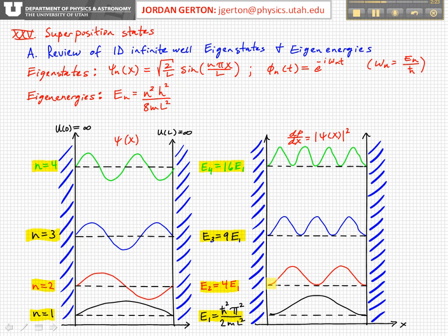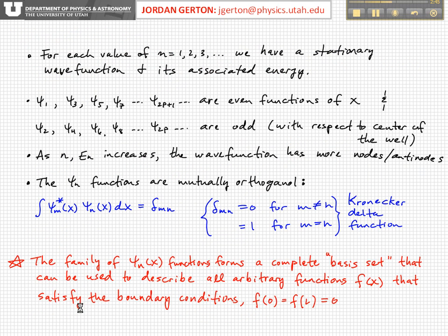So this is the context, and one of the things that we learned is that these eigenfunctions, the ψ_n's, they form a complete basis state, which means that they're orthogonal to each other, and they can be used to generate any random function that satisfies the boundary equations. And we'll talk about that a lot more today.